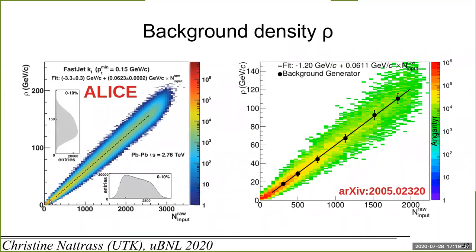You can see rho plotted versus the multiplicity of charged hadrons. There's a very strong dependence on just the number of particles — that pretty much sets the background density. Comparing Pythia-Angantir to our random number generator, they give remarkably similar slopes, meaning the background density is primarily determined by how many particles there are.